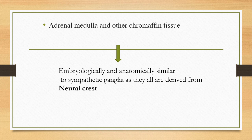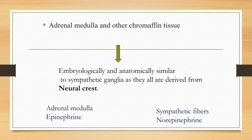The adrenal medulla and other chromaffin tissues are embryologically and anatomically similar to sympathetic ganglia, as they are all derived from the neural crest. The adrenal medulla releases epinephrine, while sympathetic fibers release norepinephrine.